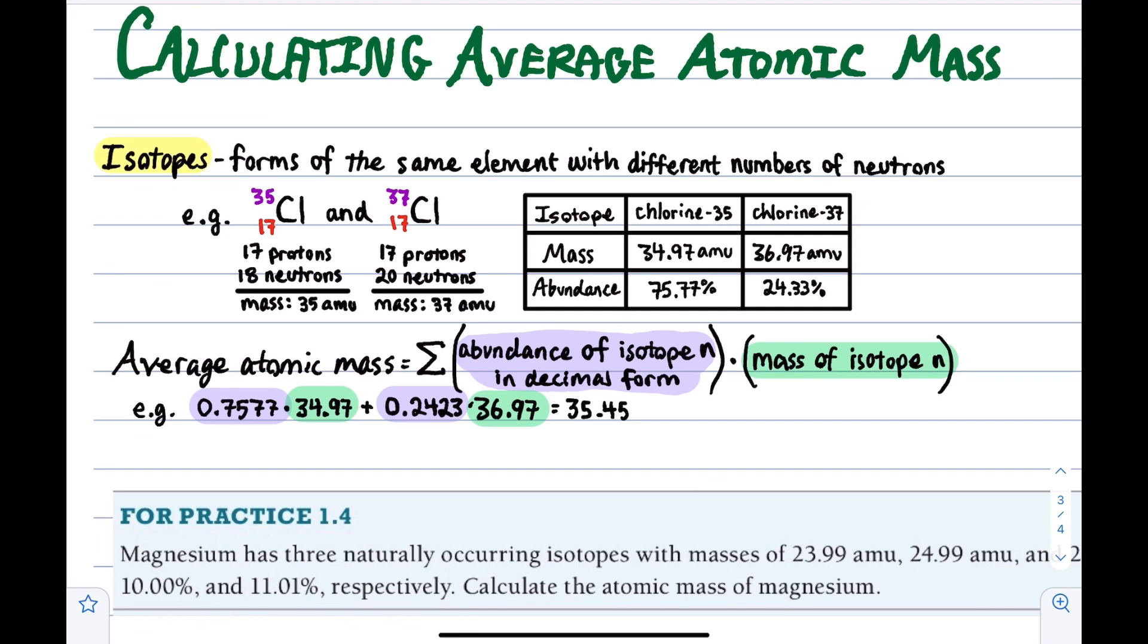So we can have many isotopes of the same atom, for example, chlorine-35 and chlorine-37, that have different masses, 35 and 37, but they act the same because they have the same number of protons, 17 in the case of chlorine.